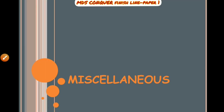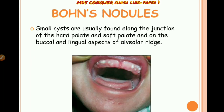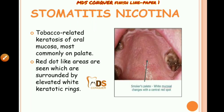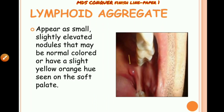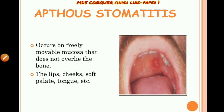Other miscellaneous lesions: Epstein pearls are developmental cysts seen along the mid-palatine raphe. Bony nodules can be seen on the soft palate and at the junction of hard and soft palate. Stomatitis nicotina shows inflammation of minor salivary glands on the palate and is tobacco-related. Lymphoid aggregates present as elevated nodules with a slight yellow-orange hue on the soft palate.